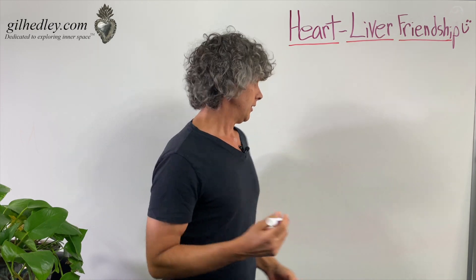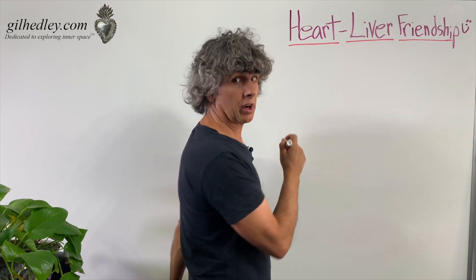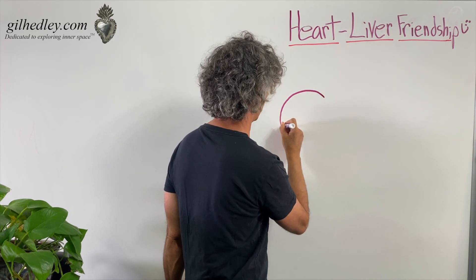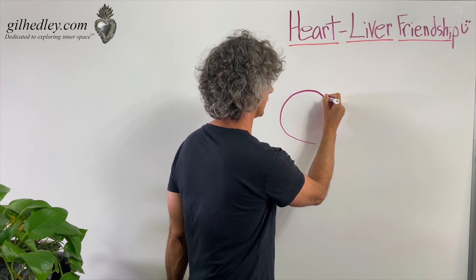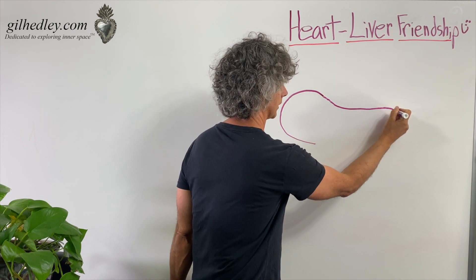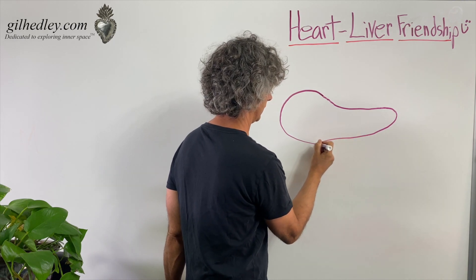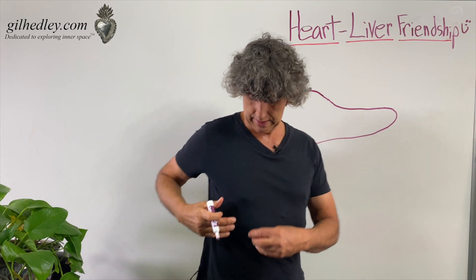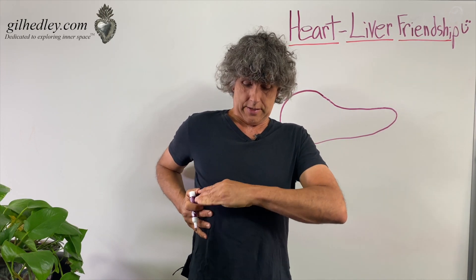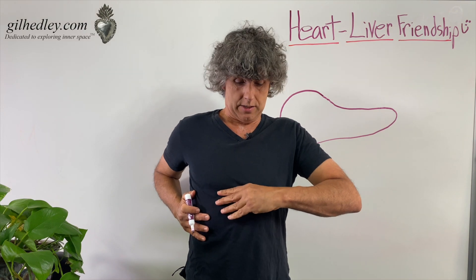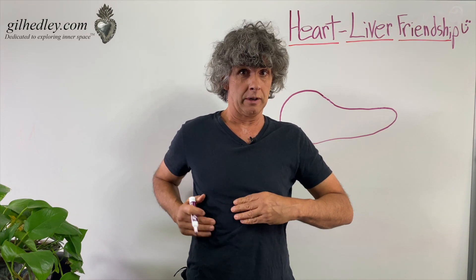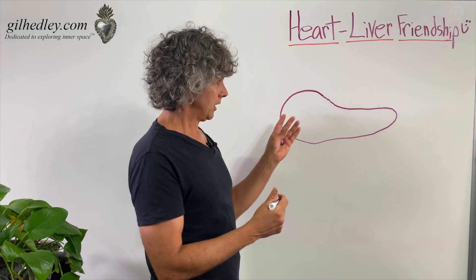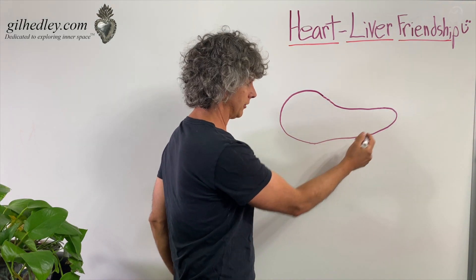So the liver — let's draw a liver. Livers are usually kind of bigger on this side. Call that the right lobe. And then they're a little flatter and longer on this side. That's not a great drawing of a liver, but it's a general idea. Your liver is big on this side and then it comes across your body and forms a left lobe, which is kind of like a tongue or something like that. So there's your liver — right lobe, left lobe.